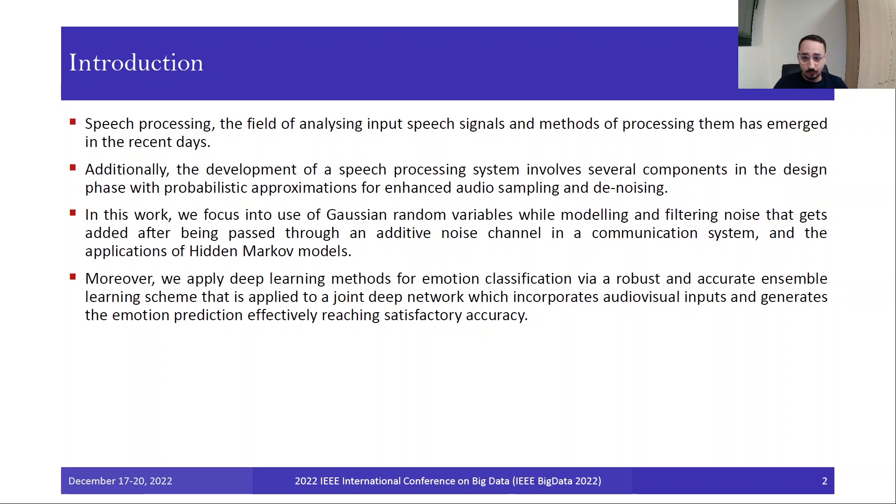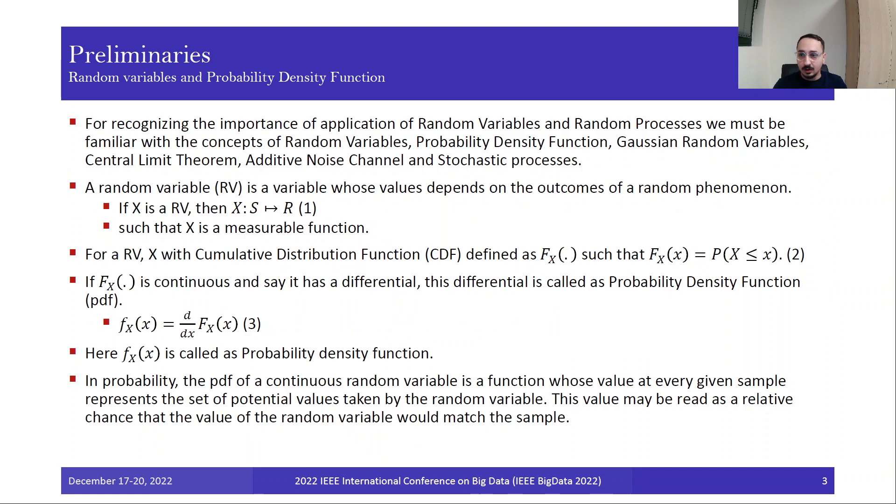Speech processing, the field of analyzing input speech signals and methods of processing them, has emerged in recent days. Additionally, the development of speech processing systems involves several components in the design phase with probabilistic approximations for enhanced audio sampling and denoising. We apply deep learning methods for emotion classification via a robust ensemble learning scheme that incorporates audiovisual inputs and generates emotion predictions, effectively reaching satisfactory accuracy.